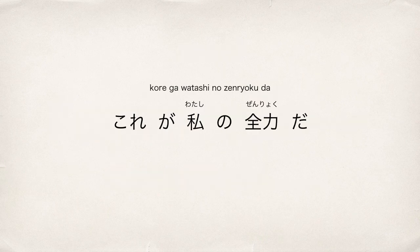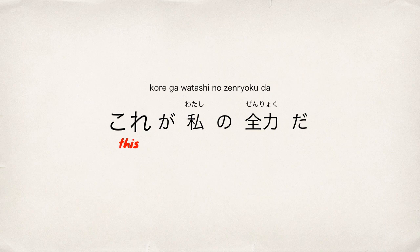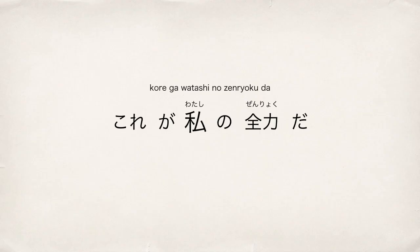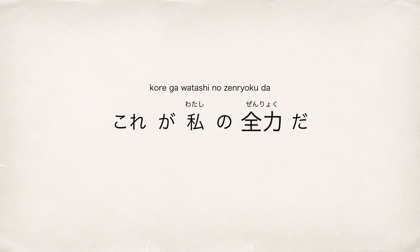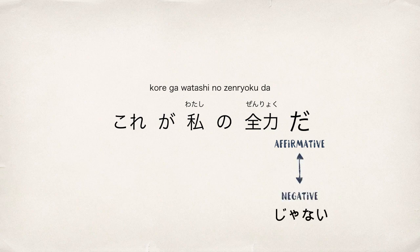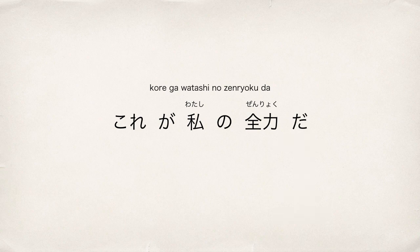Now let's look at the second sentence: これが私の全力だ。これ means 'this.' が is the subject particle, and this が is used to emphasize これ, as Mikoto is showing something that Terastina has never seen. 私 means 'I,' and with the particle の you can make it possession, so 私の means 'my.' 全力 means 'full strength.' だ is used to make a sentence affirmative and declarative — the opposite of じゃない. So これが私の全力だ means 'this is my full strength.'